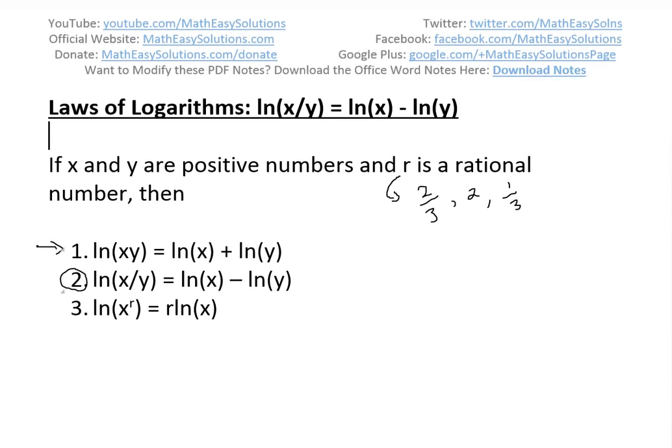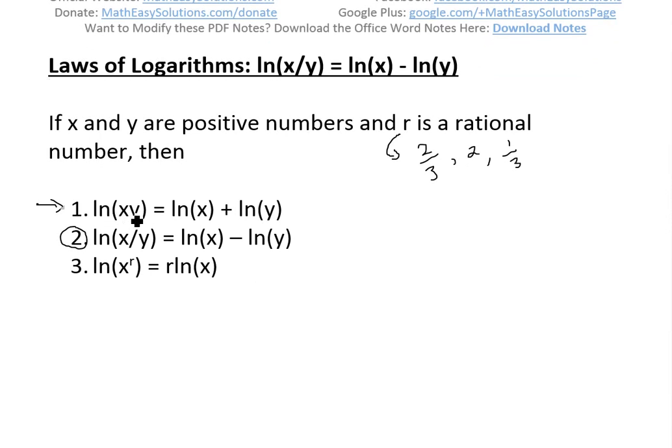So when you have x and y are positive numbers and r is rational, then the first law is ln(xy) equals ln(x) plus ln(y), and the second one, ln(x/y), it's the same thing, but ln(x) minus ln(y), and the last one, ln(x^r) is equal to just r ln(x), you just bring that down.